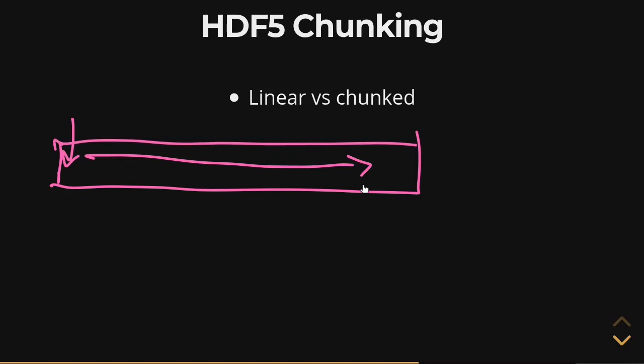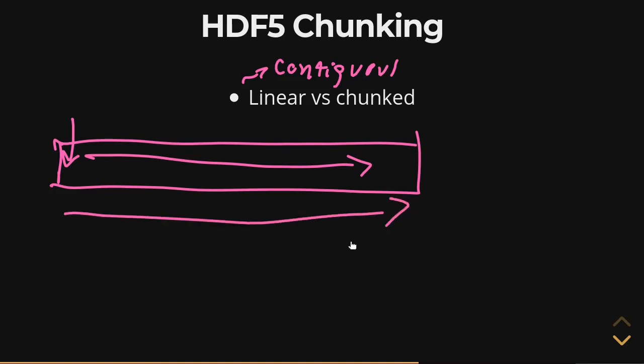If you go to load and read this linear dataset — also sometimes called a contiguous dataset — into your program, it has to read the entire dataset completely into memory before the operation is complete. It's an atomic, fully consistent block of data.